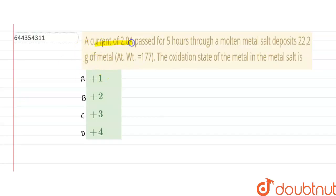a current of 2 ampere is passed for 5 hours through a molten metal salt which deposits 22.2 grams of metal whose atomic weight has been given to us as 177. We have to tell the oxidation state of the metal in the metal salt.